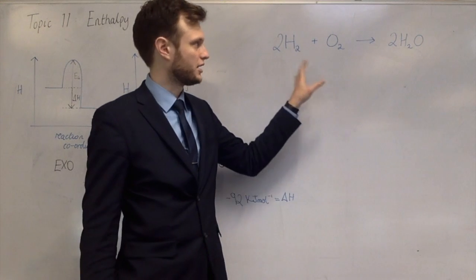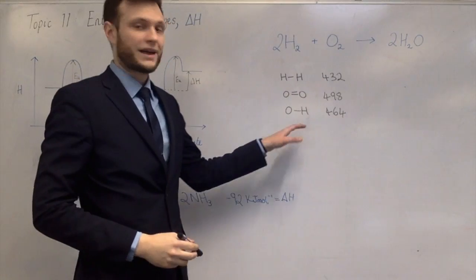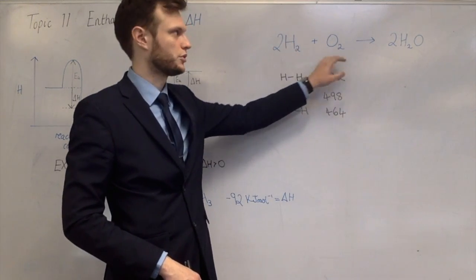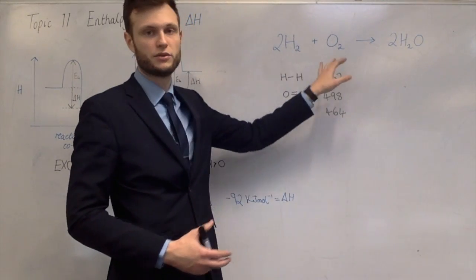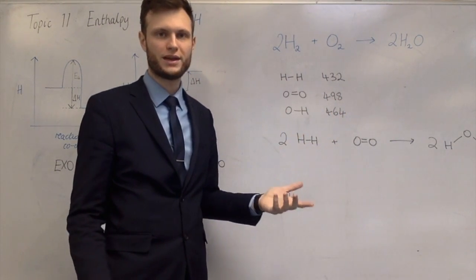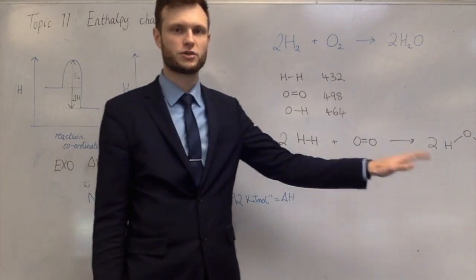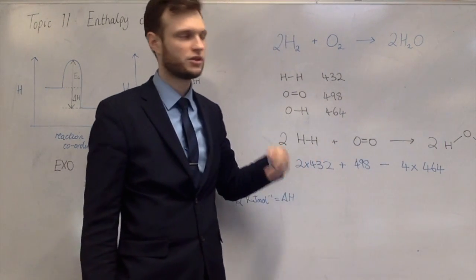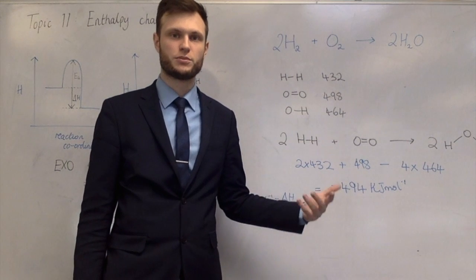You'll be given the data you need. The bond enthalpies are in kilojoules per mole. You'll also need to be able to draw the chemicals — hydrogen molecule, oxygen molecule, and water molecule. Once you know what the chemicals look like you know what bonds are present. Add together the bond enthalpies on the left-hand side, add together those on the right-hand side, and do left minus right. Don't forget that each water molecule has two O–H bonds, so two water molecules give four O–H bonds.